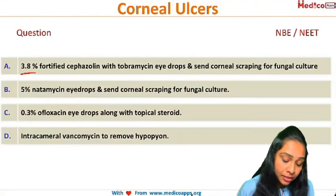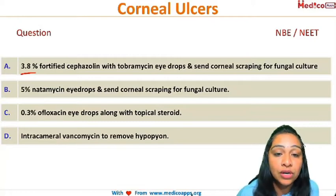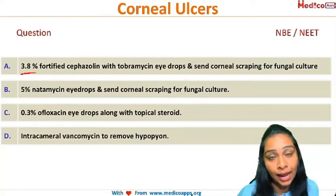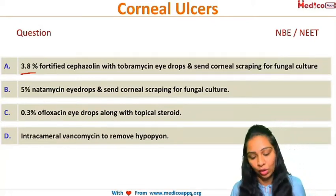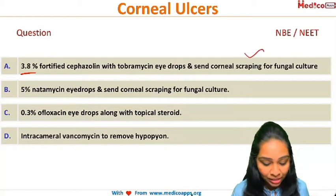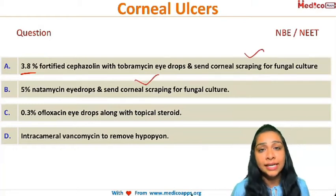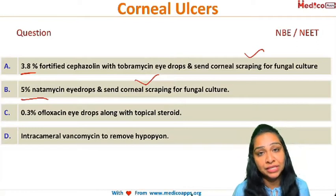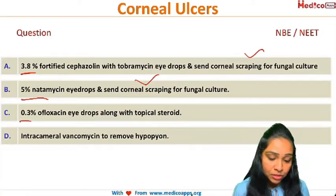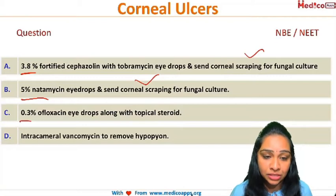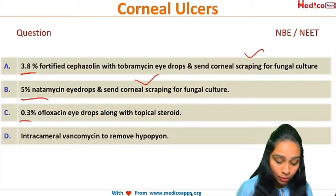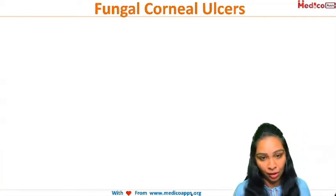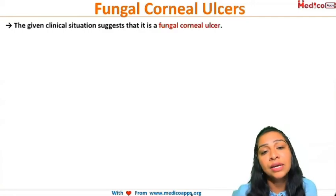Now let's look at the options. Option A: treat with 3.8% fortified cefazolin and tobramycin along with sending corneal scraping for fungal culture. Option B: send corneal scraping for fungal culture along with 5% Natamycin eye drops. Option C: 0.3% ofloxacin eye drops with topical steroid. Option D: intracameral vancomycin.